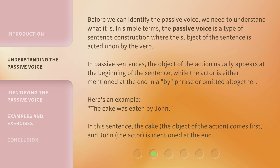Here's an example: 'The cake was eaten by John.' In this sentence, 'the cake' — the object of the action — comes first, and John, the actor, is mentioned at the end.